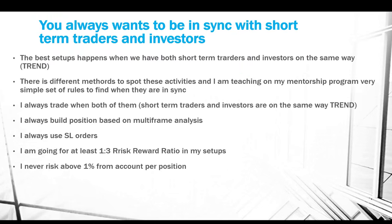Never risk above 1% of my account per position — that's the maximum. I can trade at 0.2 to 0.5 or up to 1%, depending on the account type. For institutional accounts where large investors want a maximum 5% drawdown, I cannot risk 1% per trade — I must go much lower, like 0.3%. Investors want low drawdown, 5 to 10% maximum, so I adjust my risk accordingly.